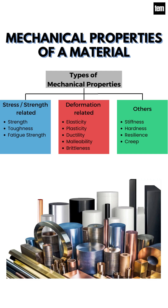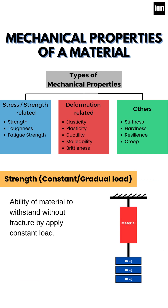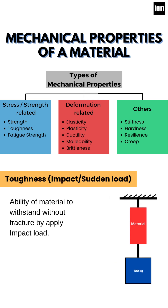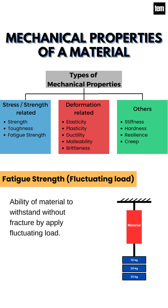Mechanical properties of material. Strength: ability of a material to withstand without fracture when a constant load is applied. Toughness: ability of a material to withstand without fracture when an impact load is applied.